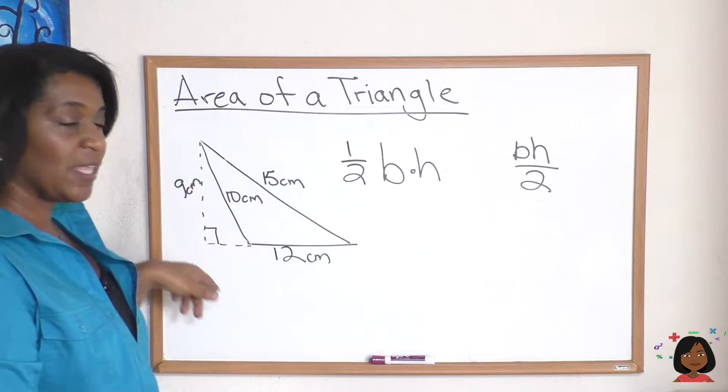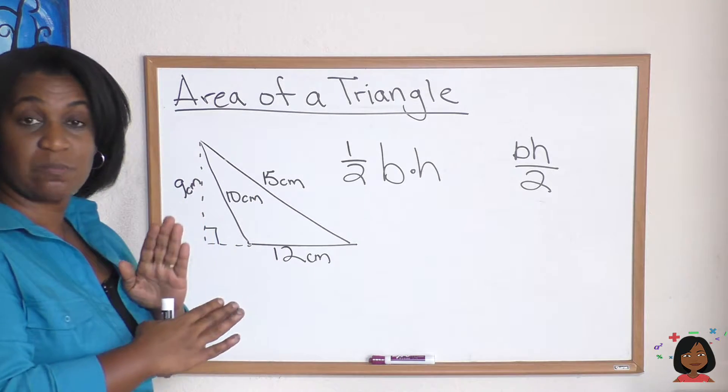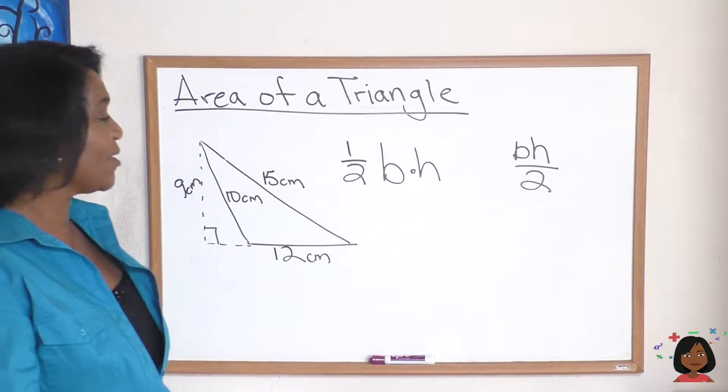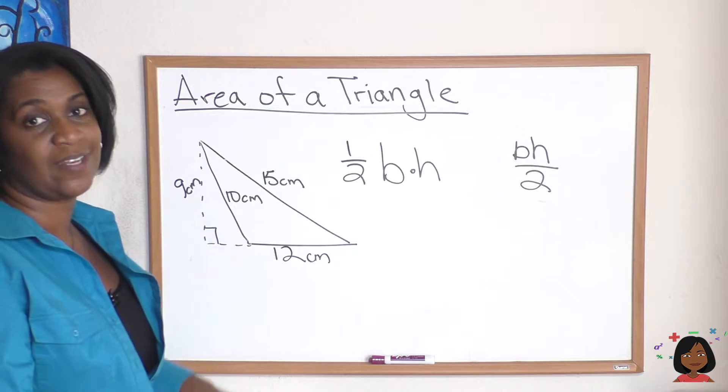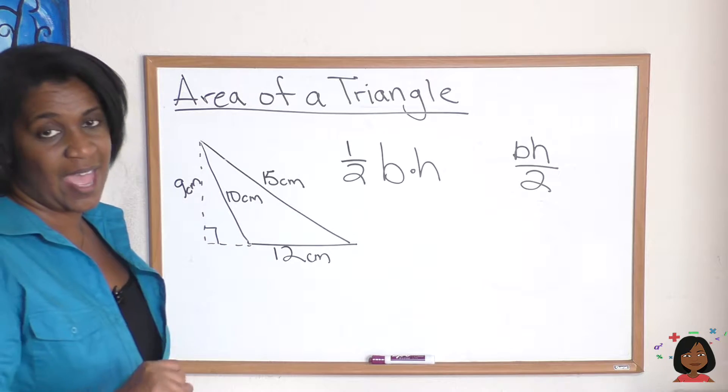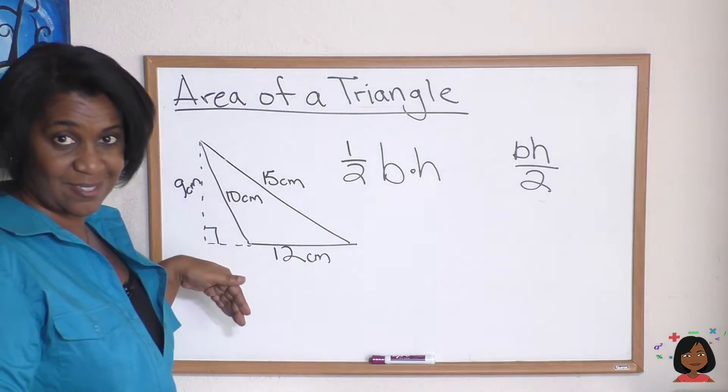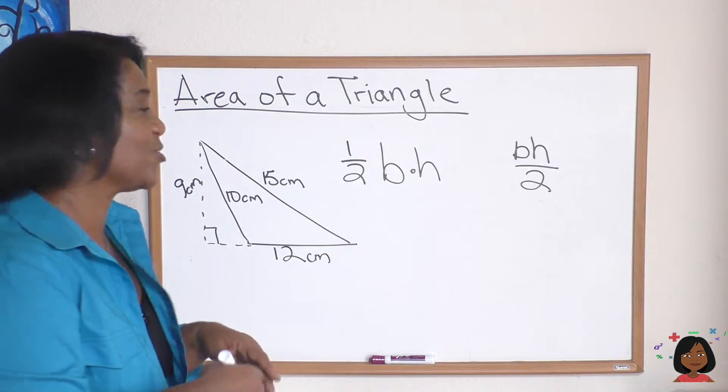No, because remember our height always has to do with those perpendicular lines. So we were lucky here that they gave us, if that line was dropped down and made perpendicular, what it would actually be. They gave that to us. So if you had to choose between nine and ten, you're going to choose the nine as the height because that's the perpendicular line to the base.